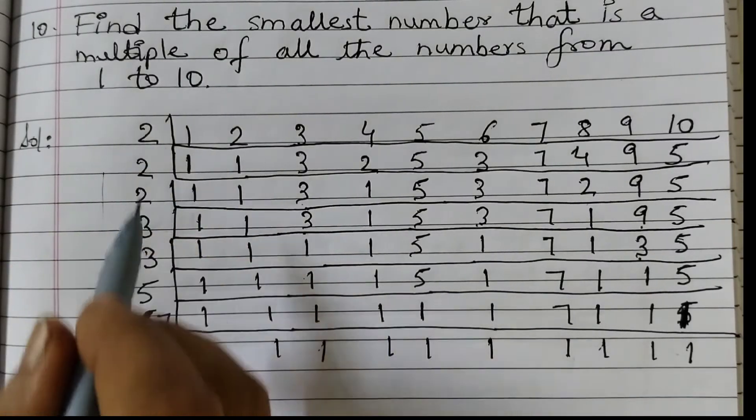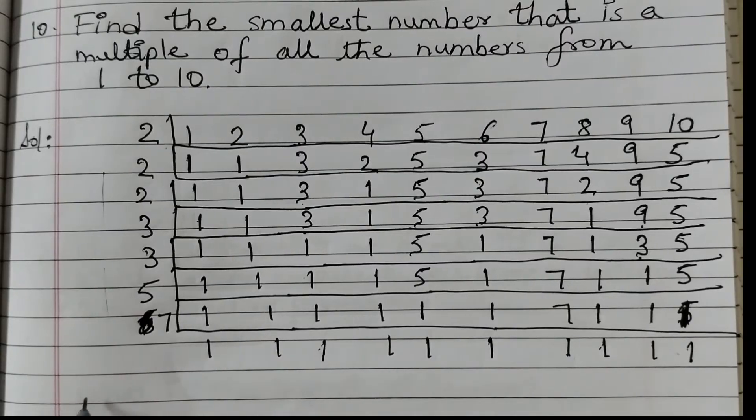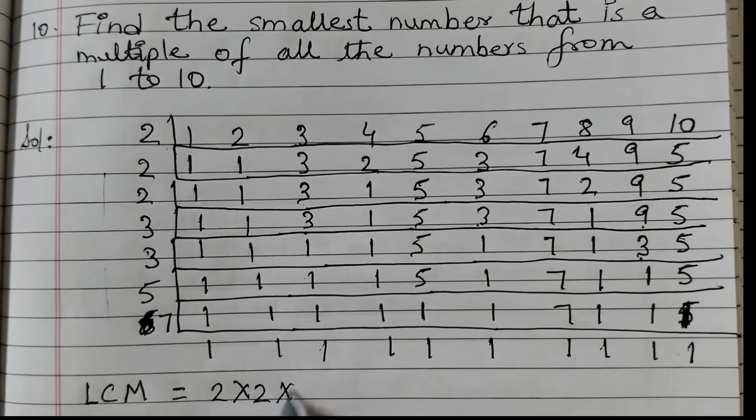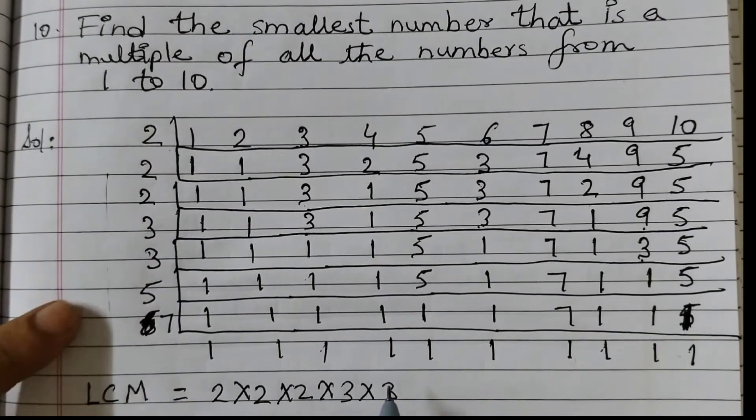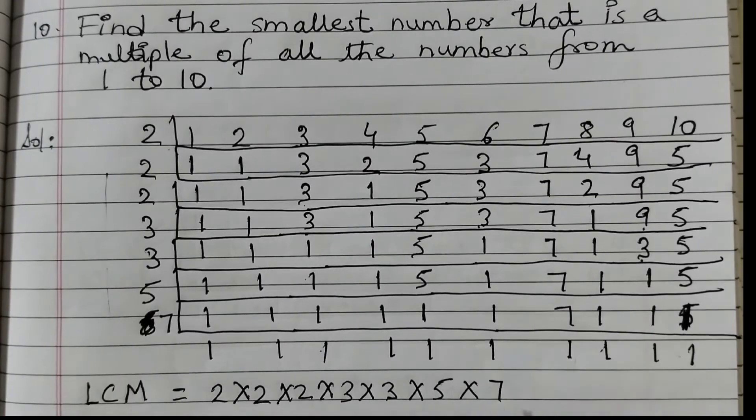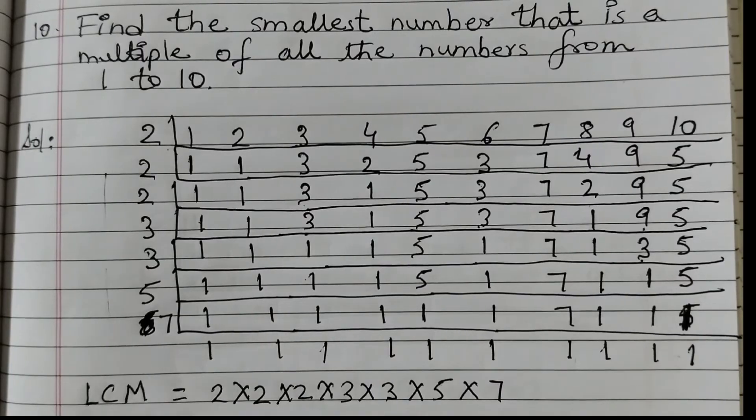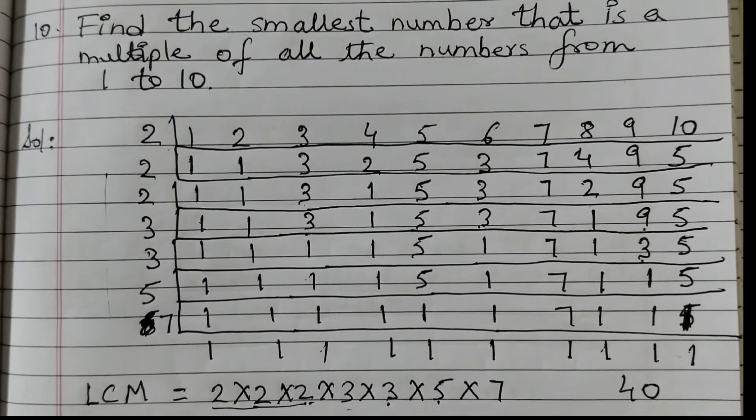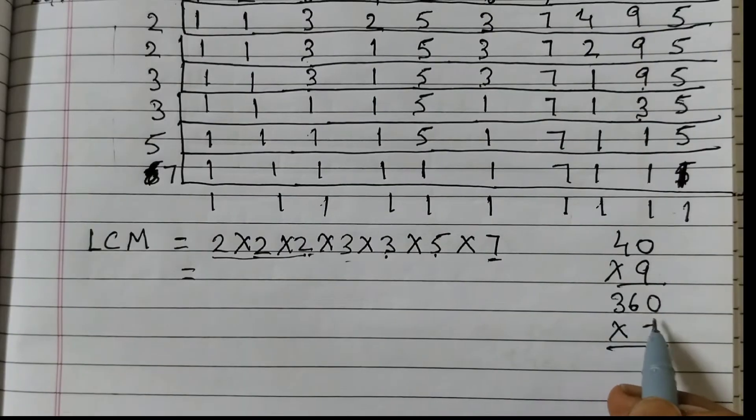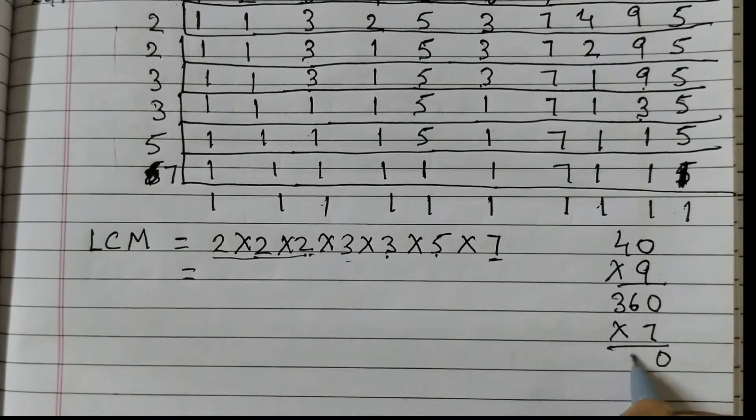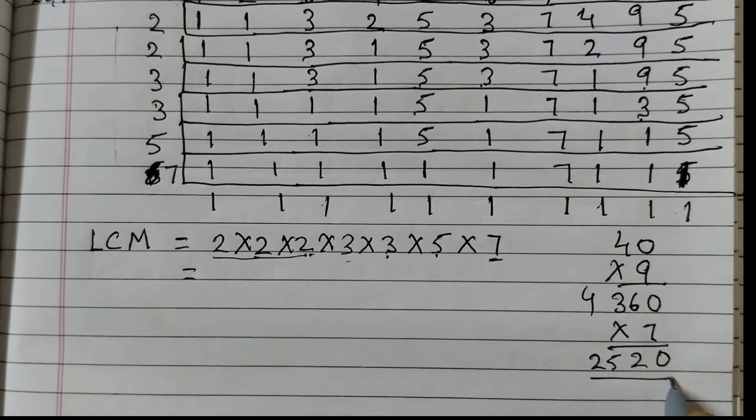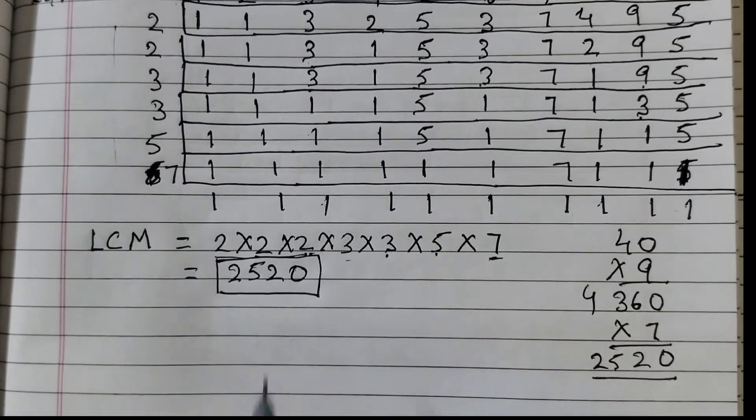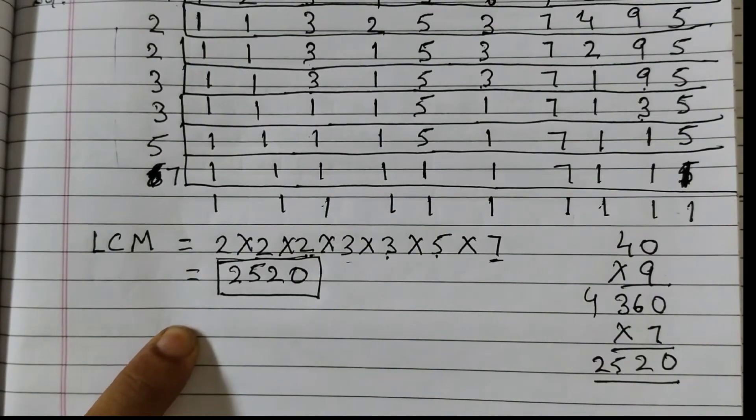Now we are going to multiply all these numbers and that will be the smallest number that is the multiple of all these numbers. So LCM, the least common multiple is equal to 2 into 2 into 2, then we have 2 3's, 3 into 3, 5 and 7, into 5 into 7. Now you can just rearrange and do easy multiplications. 2 to the 4 is 8, 5 is 40 and here it is 9, 3 3's are 9. So this is 360. We already did in question number 9. Multiply just by 7 now. So 0, 7, 6 of 42, 4, 7, 3 is 21, 25. 2520. And this is the required smallest number that is a multiple or the LCM of all the numbers from 1 to 10.